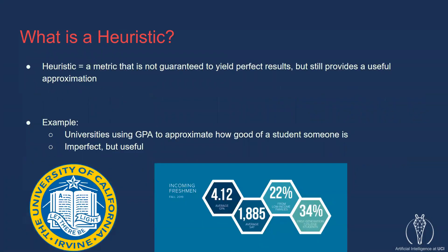So, what is a heuristic? In order to understand what a heuristic evaluation function is, it's important that we know what is meant by heuristic. A heuristic is a metric that is not guaranteed to yield perfect results, but still provides a useful approximation.